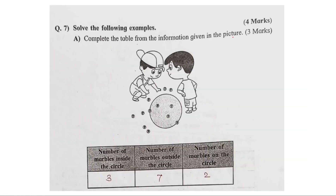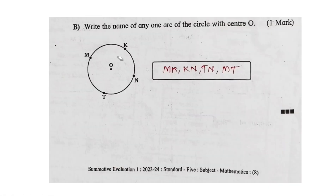Complete the table from the information given in the picture. The picture shows a circle. The circle is defined by two lines. Write the name of one arc of the circle with center X.